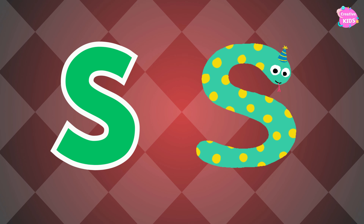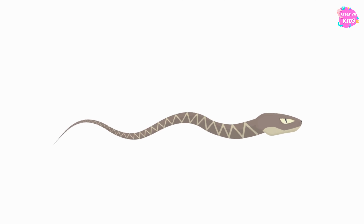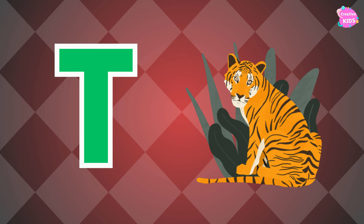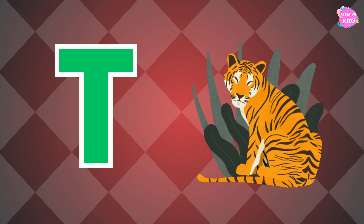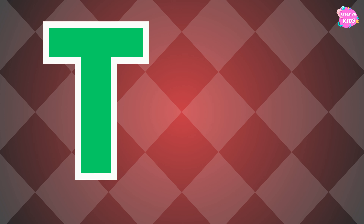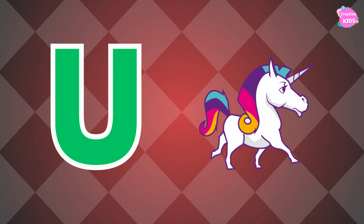S-snake. S is for snake. T is for tiger. T-tiger, T-tiger. T is for tiger. U is for unicorn. U-unicorn.